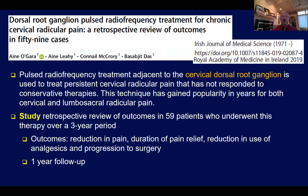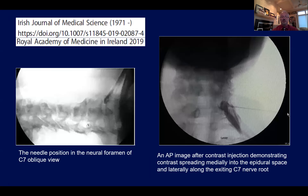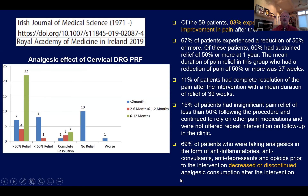A study from the Irish Journal of Medical Science by Ogara and Associates examined DRG pulsed RF for chronic cervical radicular pain — a retrospective review of 59 cases over three years — looking at pain relief, reduction in opioid analgesic use, and progression to surgery. Images show needle position in the neural foramen at C7 and contrast injection demonstrating a neurogram with some spread medially into the epidural space. Of the 59 patients, 83% experienced substantial improvement in pain, and 67% experienced a reduction of greater than or equal to 50% — a fairly substantial and clinically significant finding.